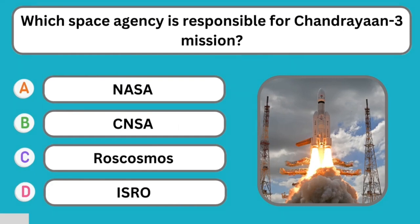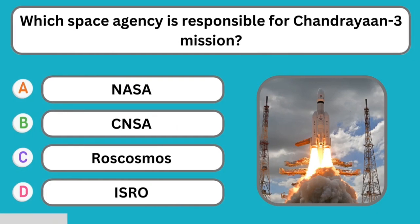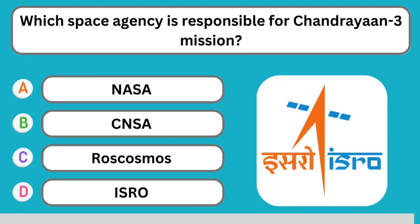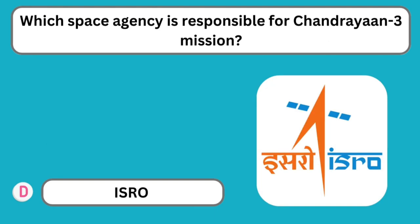Question number twelve: Which space agency is responsible for the Chandrayaan 3 mission? The correct answer is ISRO — the Indian Space Research Organization.